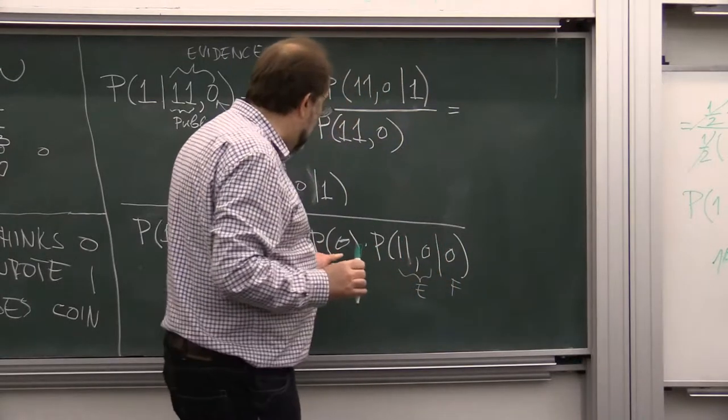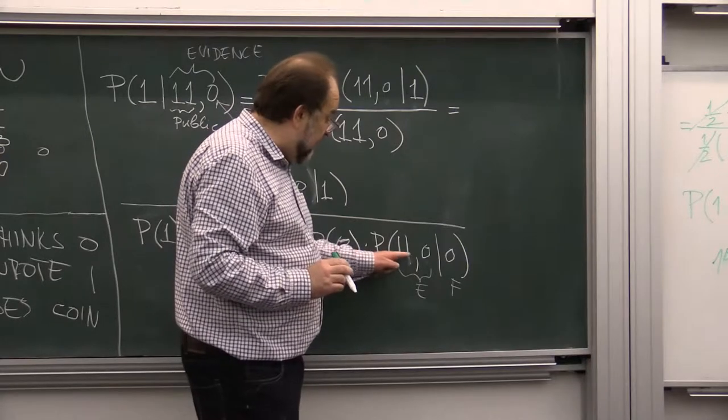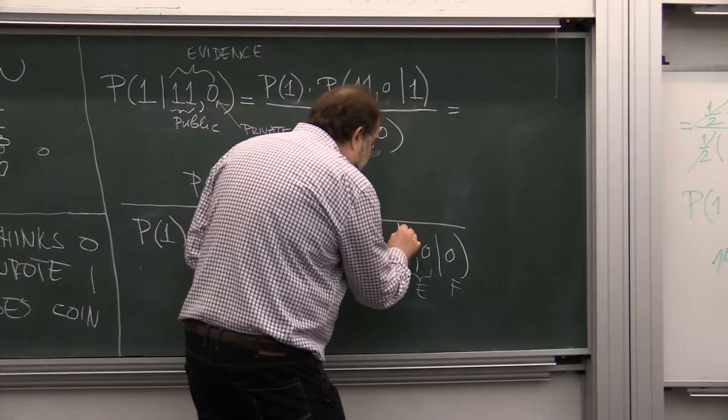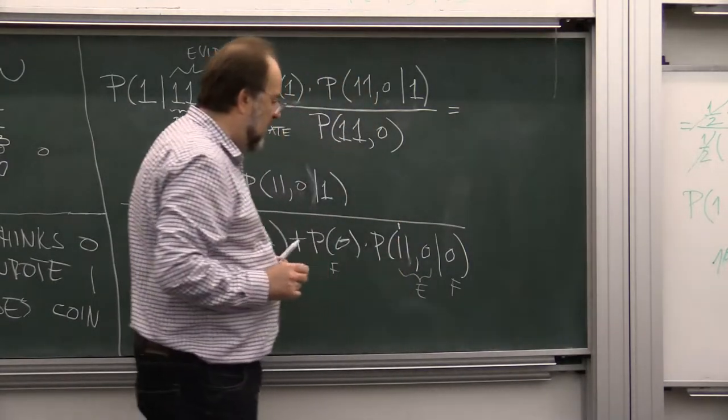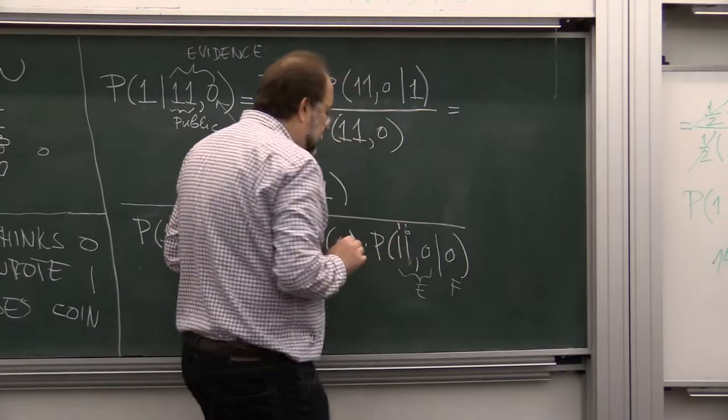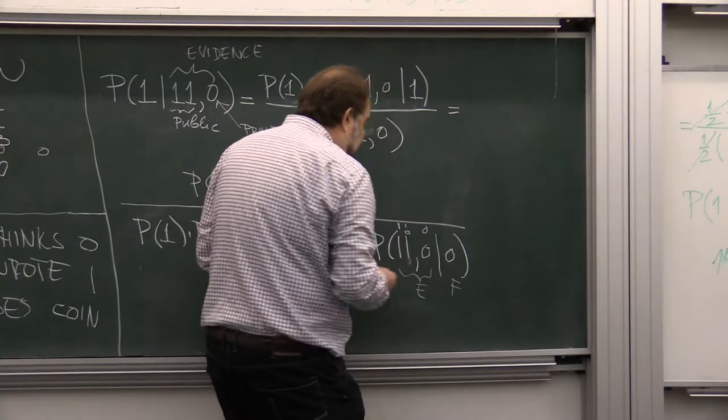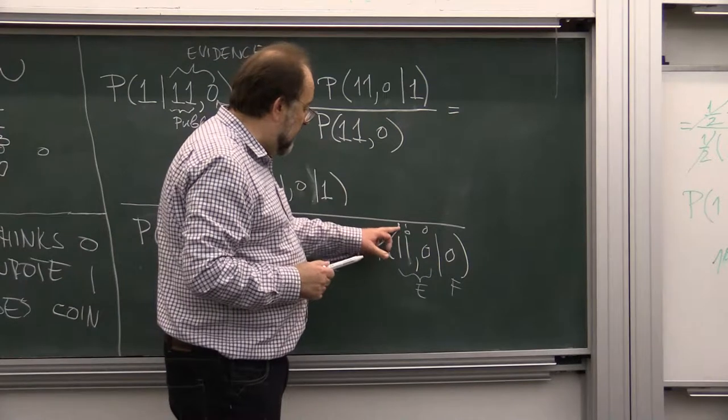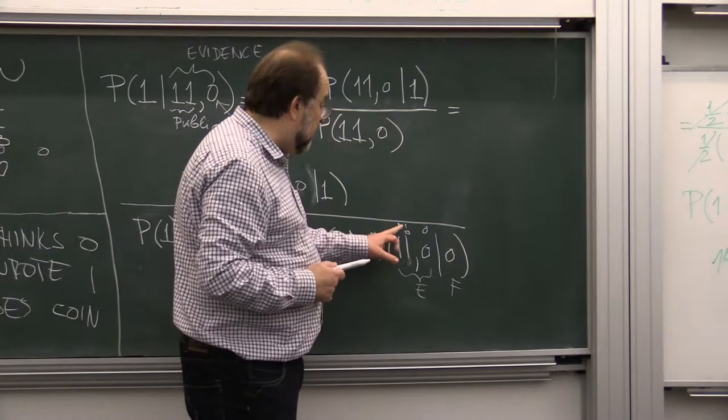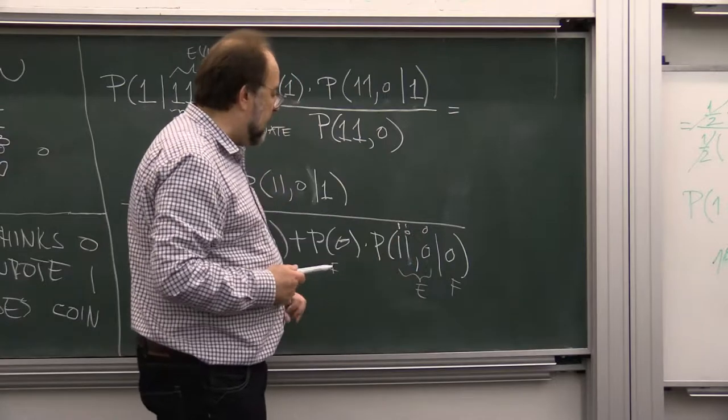The second option is assuming that the fact is false. So if the fact is false, that's probability one half, and this again could have happened in two cases. We know that the first guy must have thought that it is true, one, but this guy can still think either one or zero, and we know that the third guy thinks zero.